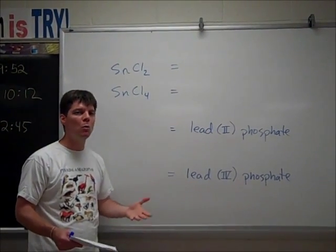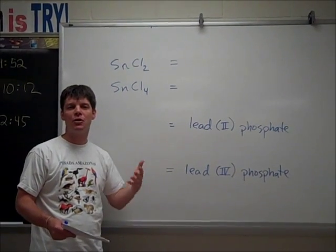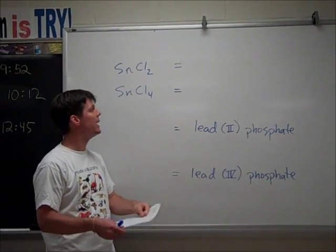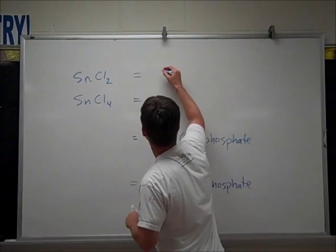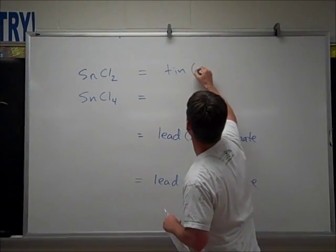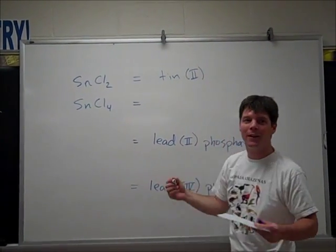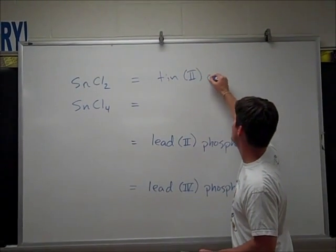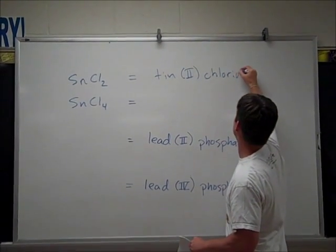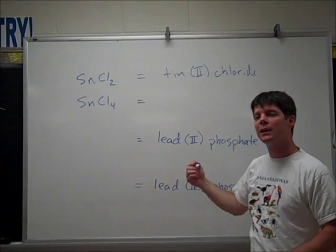Now I'm going to use a Roman numeral in my nomenclature to let me know the charge of the tin ion. That's going to look like this. I have Tin(II) chloride. The second example is Tin(IV) chloride.